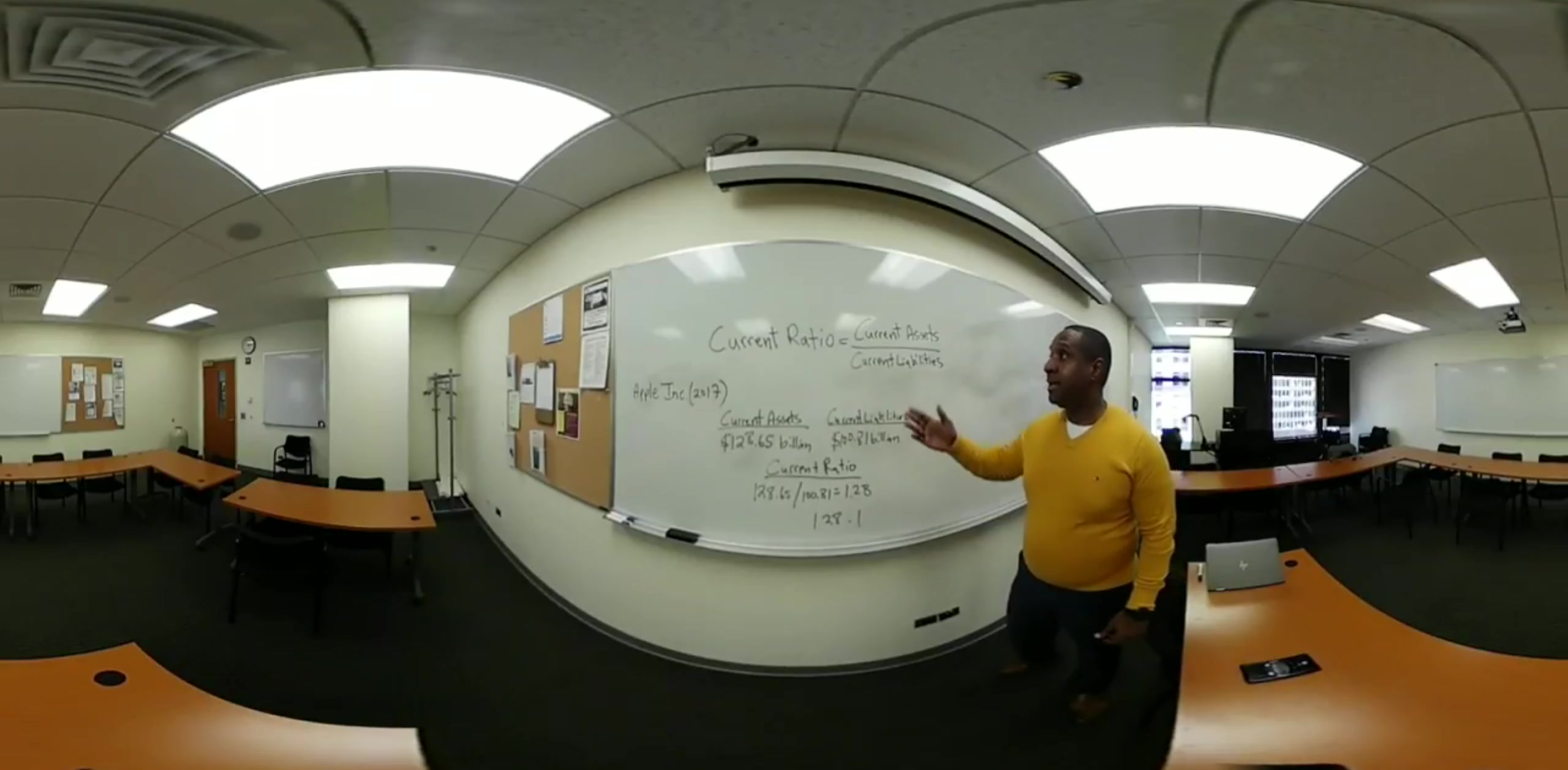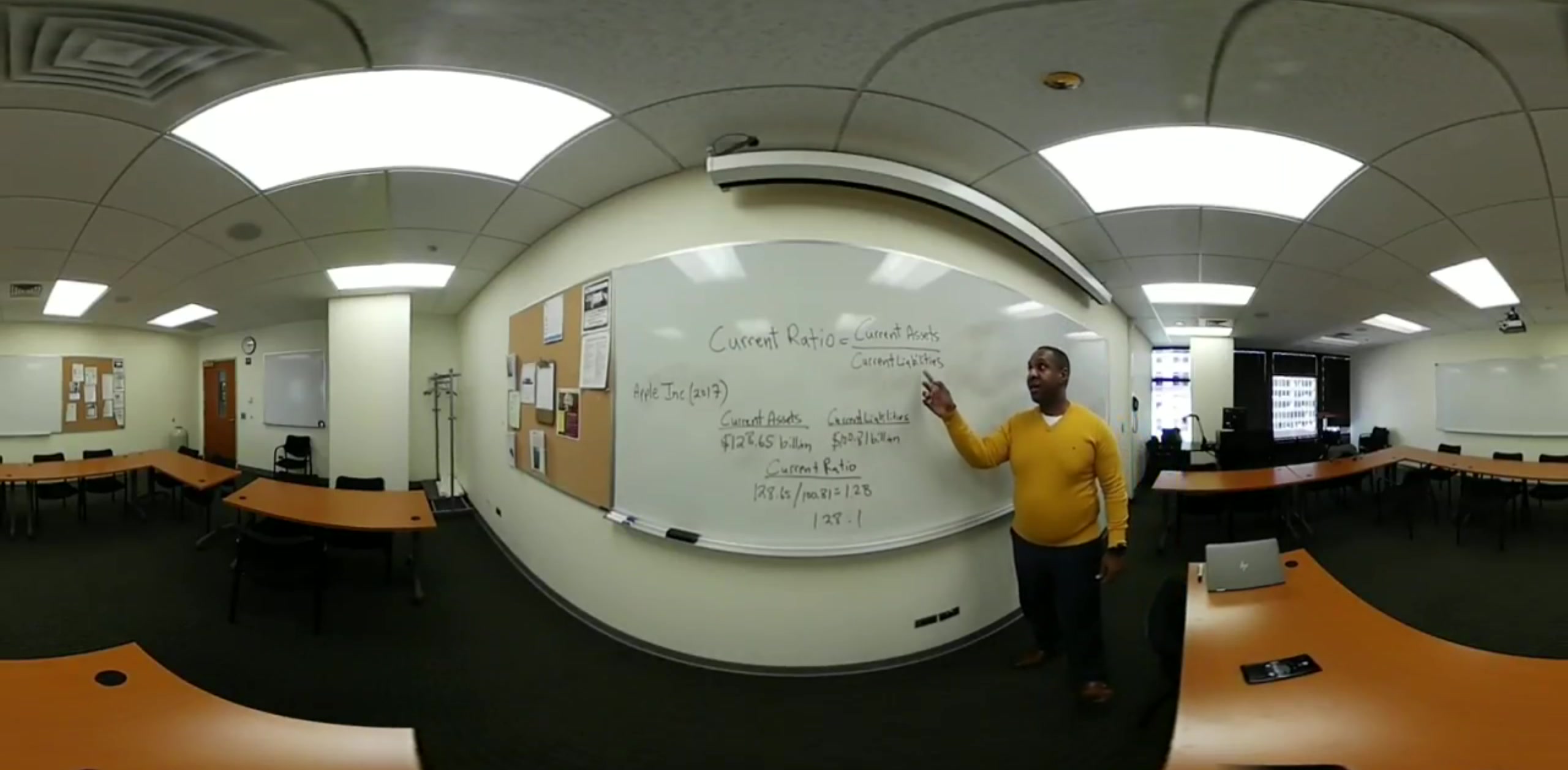So this is the current ratio. Again, the formula is current assets divided by current liabilities.